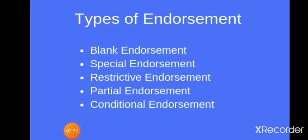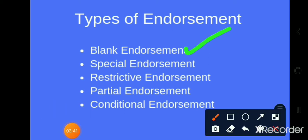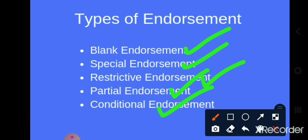Next we have the types of endorsement. As visible on your screen, different types of endorsement are given, which include blank endorsement (also called general endorsement), special or complete endorsement, restrictive endorsement, partial endorsement, and conditional endorsement.